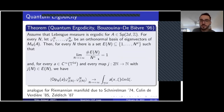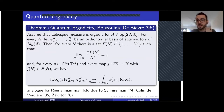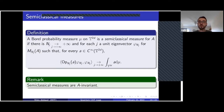The quantum unique ergodicity conjecture says that you don't need to restrict to a density-one subset of eigenstates. It was formulated first by Rudnick and Sarnak in the context of Riemannian surfaces. There is a natural equivalent in the case of quantum cat maps. I would like to reformulate this conjecture slightly differently using the notion of semi-classical measure.